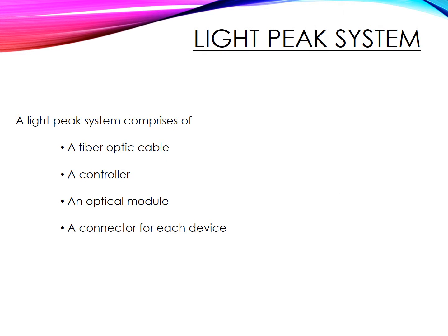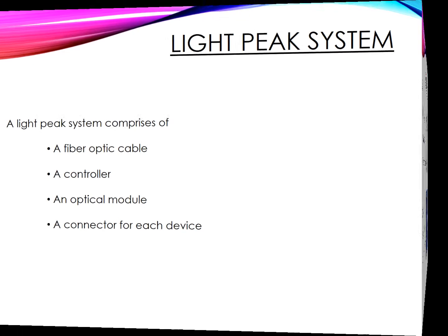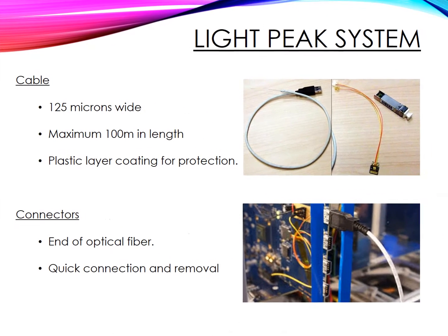These are the components of a Light Peak system. It consists of a fiber optic cable, a controller, an optical module, and a connector for each device. The Light Peak cable is 125 microns wide and has a maximum length of 100 meters. It has a plastic layer coating for protection. The connectors are at the end of the optical fiber and they provide quick connection and removal.